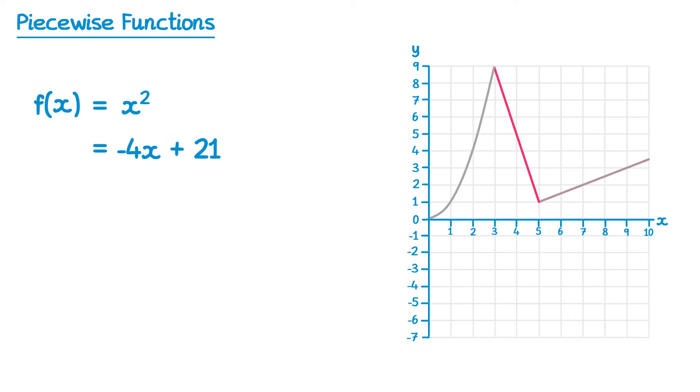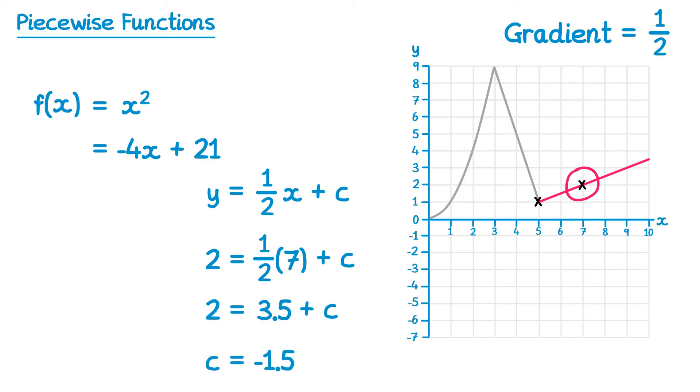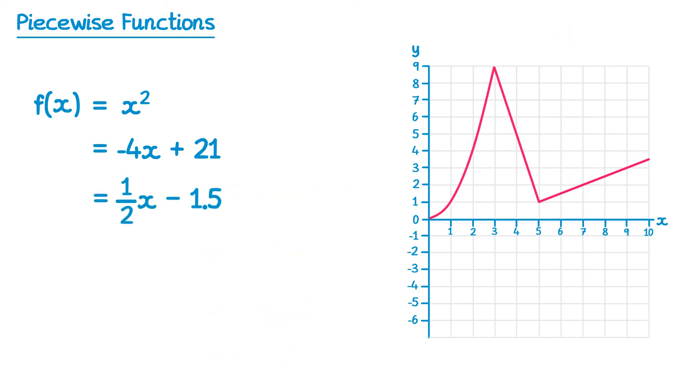Now we'll move on to the final part of the graph, this one here, it's also a straight line. So again, we'll start with a gradient triangle. I'm going to go for these two points here, and you can see the gradient of this one is positive one half. So again, it will be of the form y equals half x plus c. Let's pick a point on the line, I'll go for this one here, 7 2. Let's replace y with 2, so 2 equals, and then x with 7, so half of 7 plus c. Half of 7 is just 3.5, and then if you take away 3.5 from both sides, you'll get c equals negative 1.5. So for the final part of the function, the final piece, half x take away 1.5.